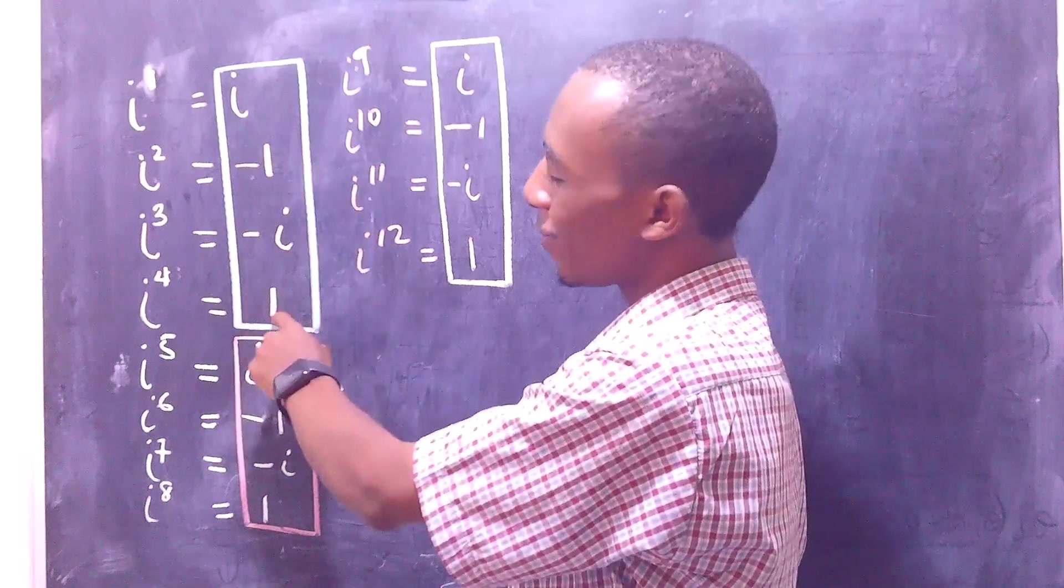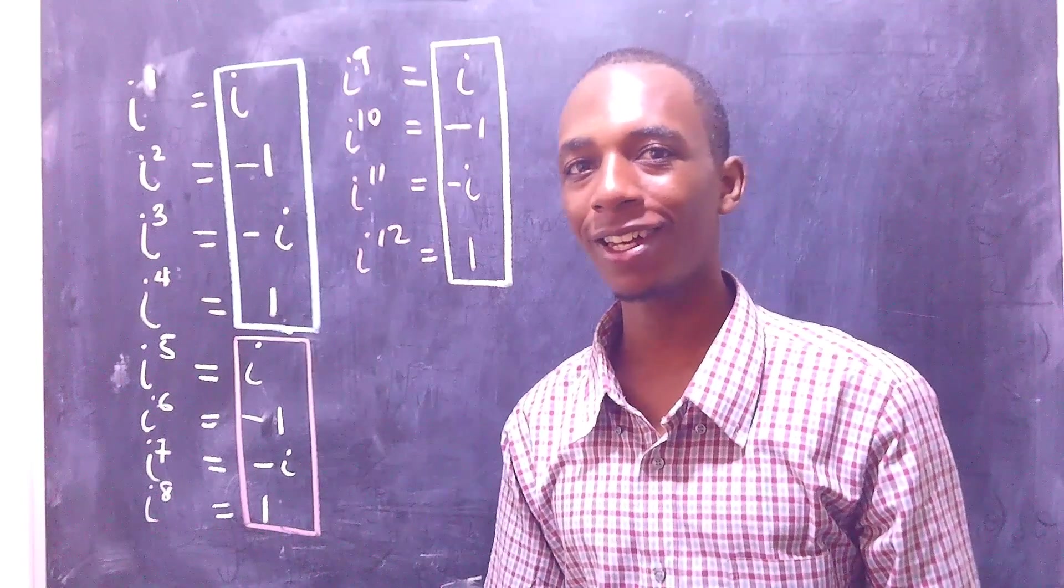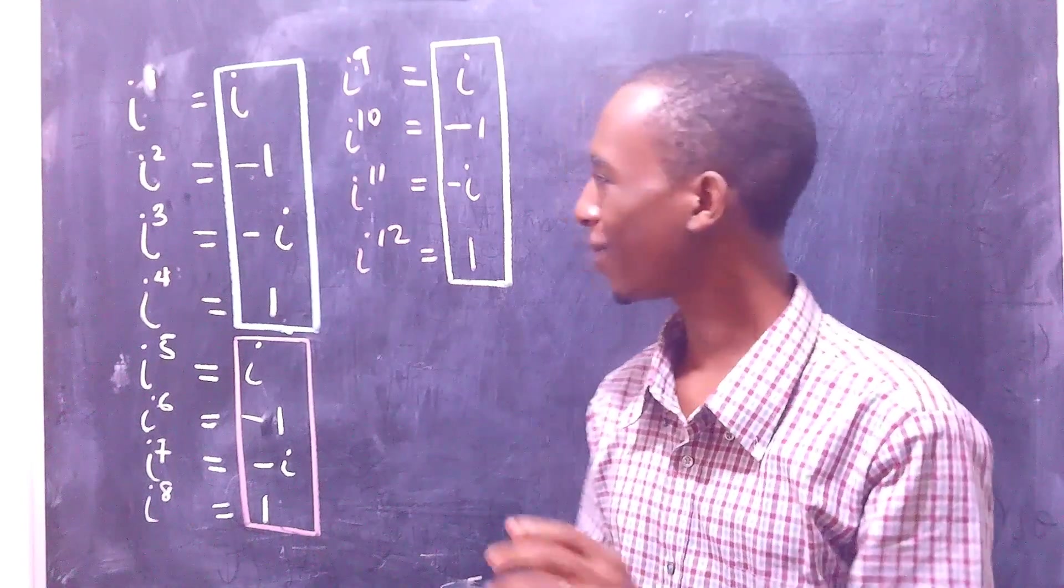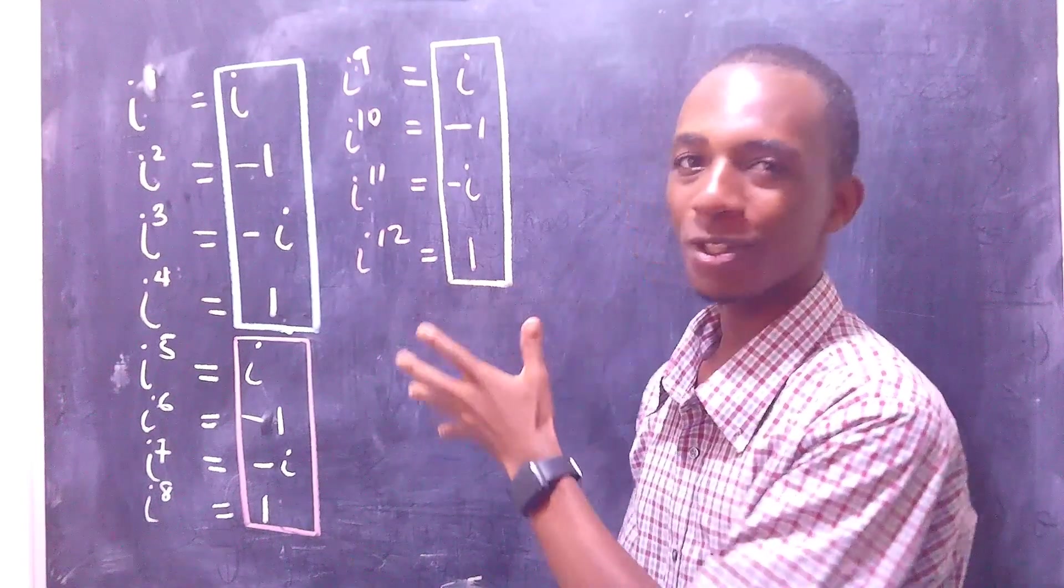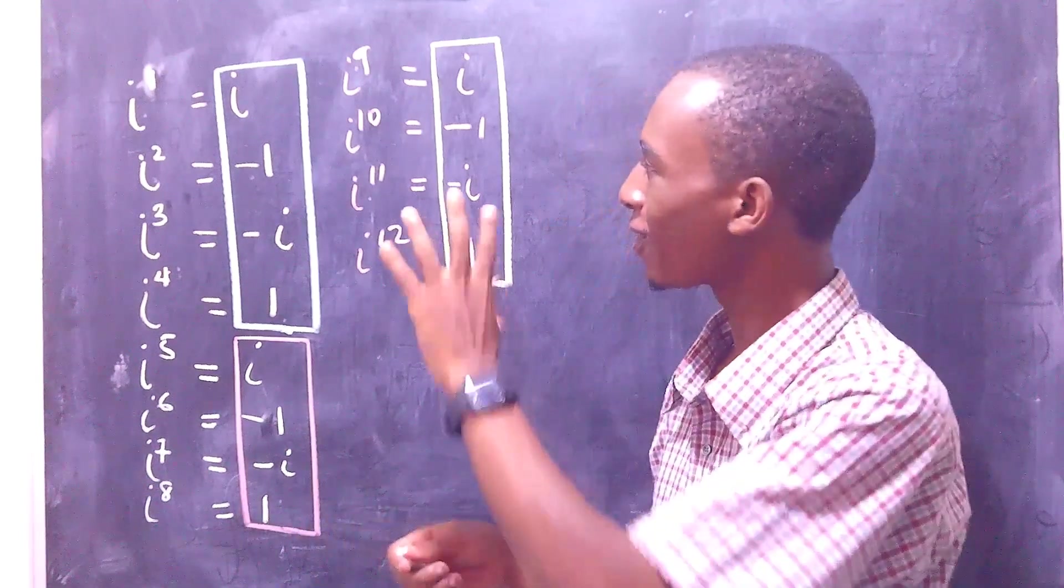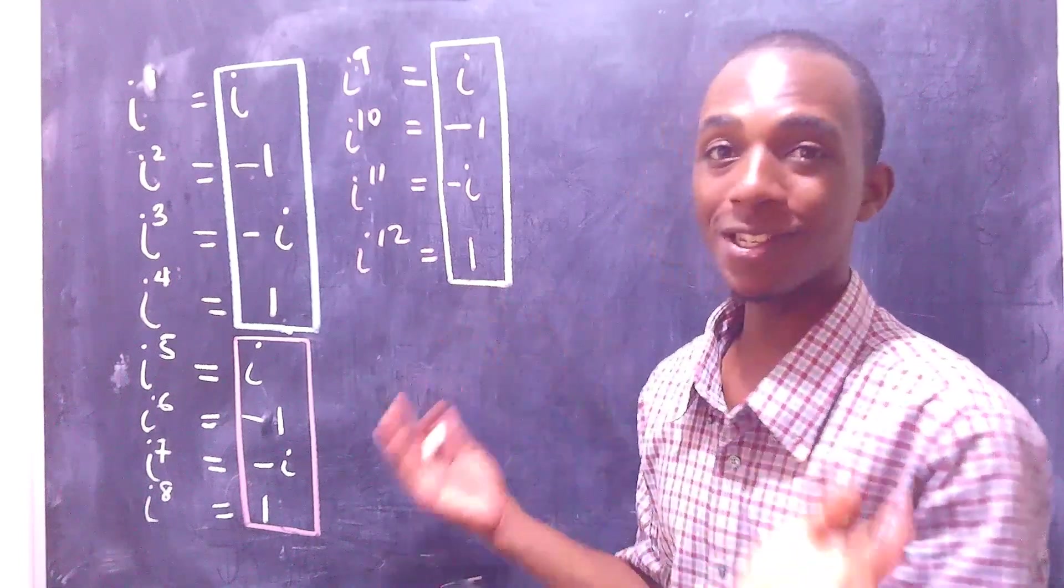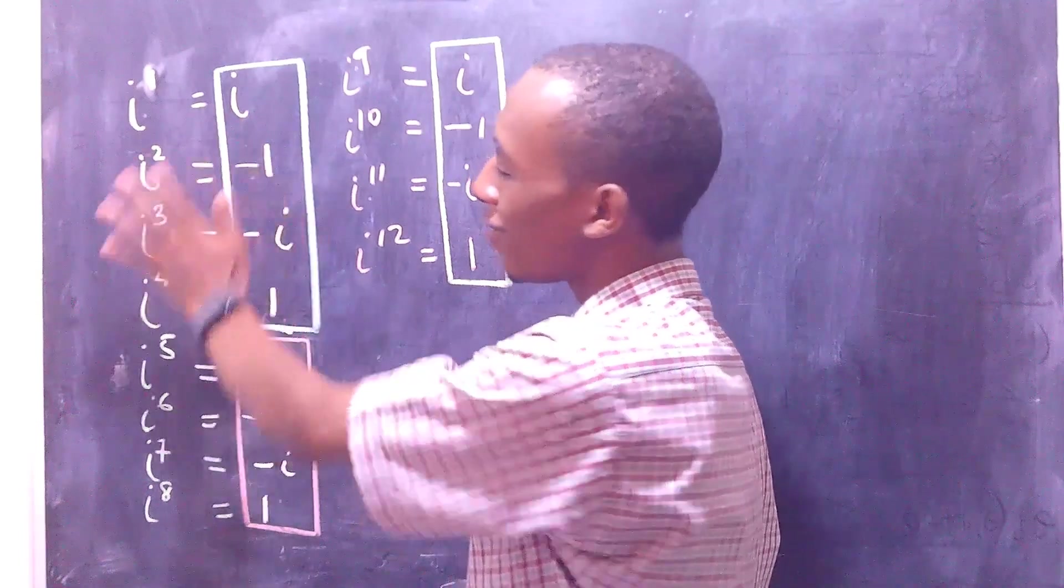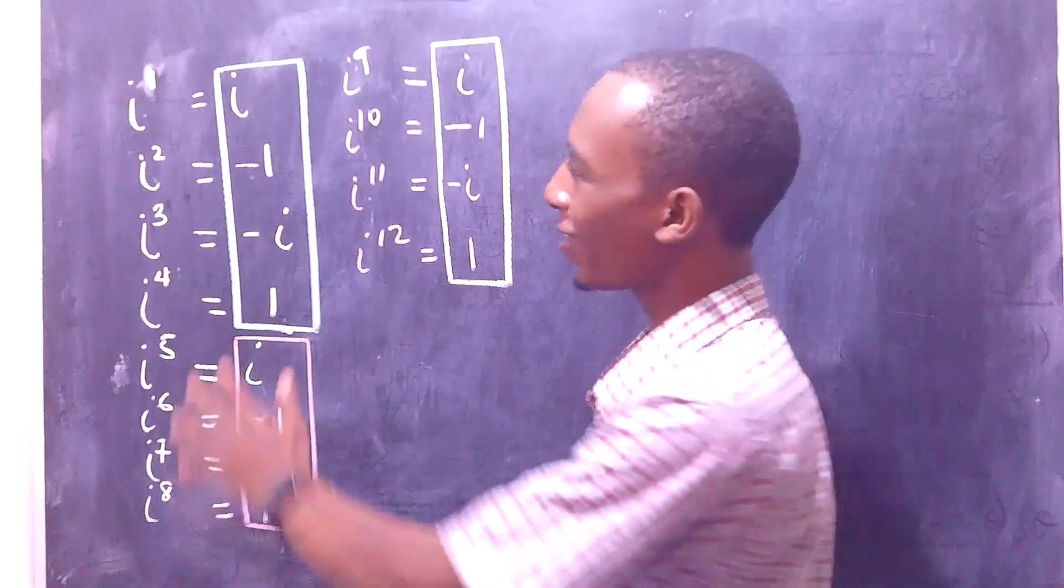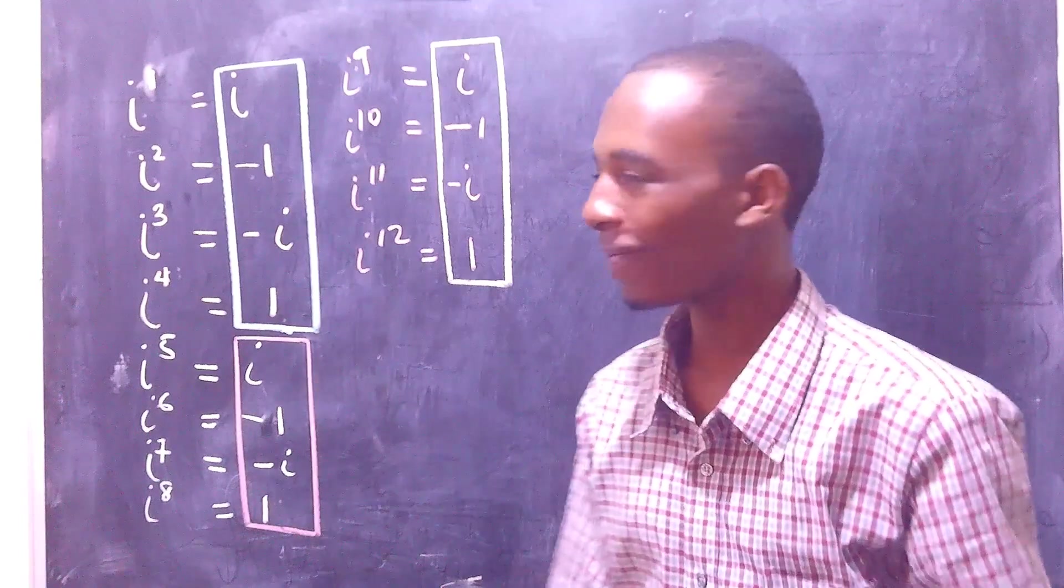If you can notice, every after four iterations, the answers are actually repeating each other. And what that means for us as mathematicians is that we can actually write this in some kind of modular system, because these are repeating each other. And so it would be just sufficient to memorize only the first four, and using those, we can calculate the rest.